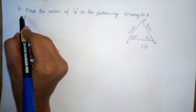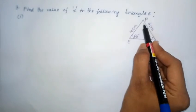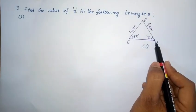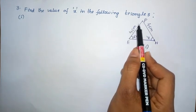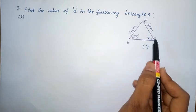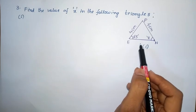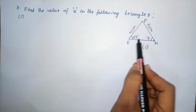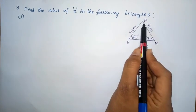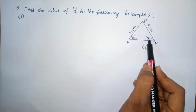Next problem, third part, first one: find the value of x in the following triangles. This is triangle PEN. In this triangle, the two sides are equal: side PE equals 4 cm and side PN also equals 4 cm. So this triangle is called an isosceles triangle. In an isosceles triangle, two angles are also equal. The side PE has opposite angle X, and the equal side PN has opposite angle 65 degrees. So these two angles are equal, and from this figure, angle X equals 65 degrees.